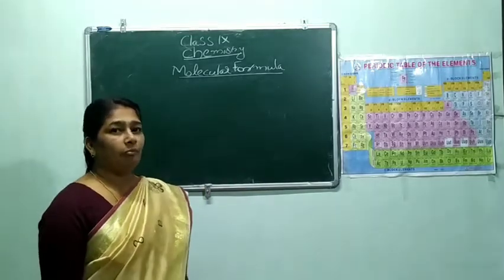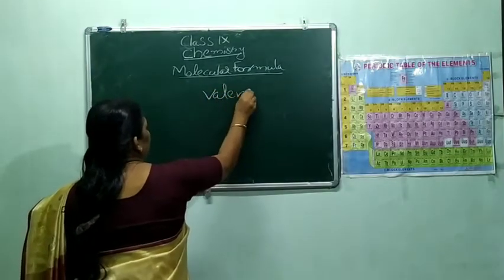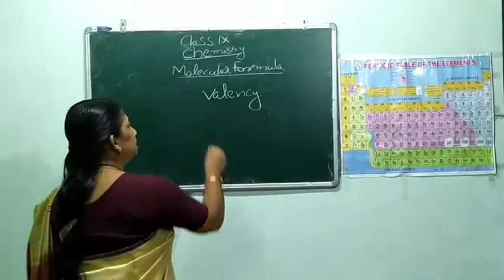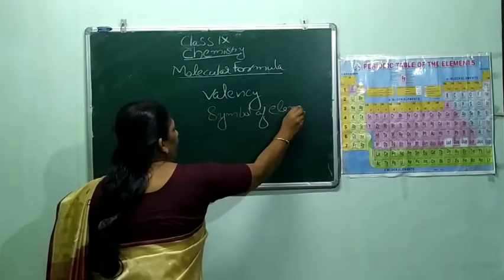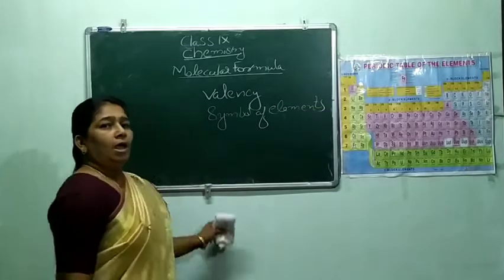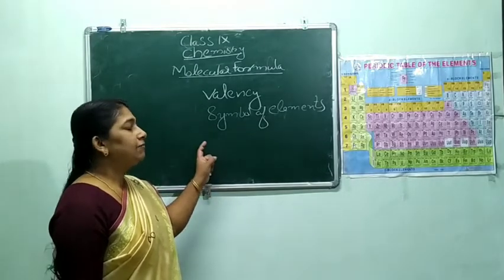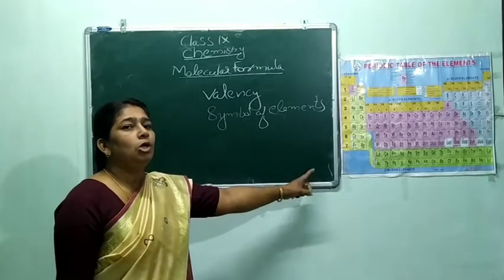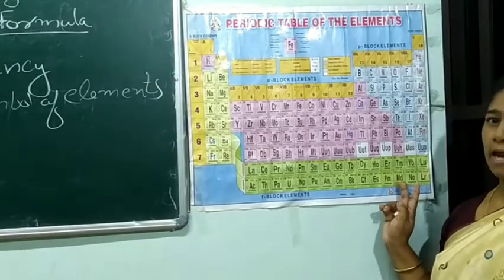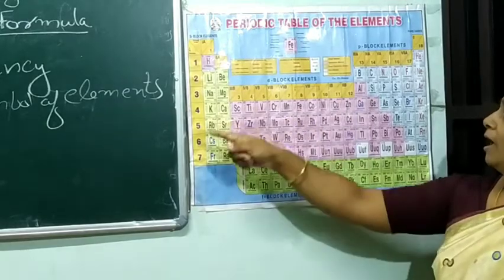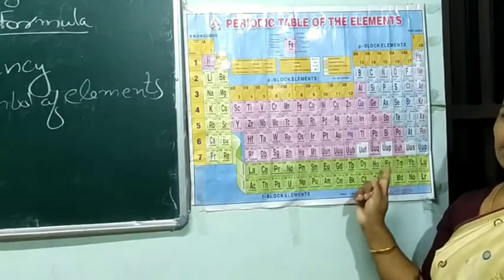In order to write the molecular formula, two things are essential. First one is valency. Second one is symbol of elements. In order to study the symbol of elements, we want to follow certain criteria, and that we can study from the periodic table. Now look at the periodic table. As I have mentioned earlier, 118 elements are there and they are arranged in 18 columns and 7 horizontal rows, and this arrangement is known as the periodic table.